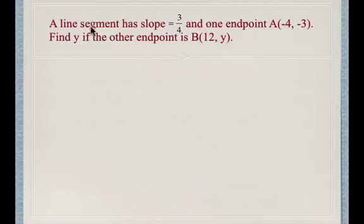Let's look at another question. A line segment has slope 3 over 4 and one endpoint A at negative 4, negative 3. The other endpoint is B at 12, y.